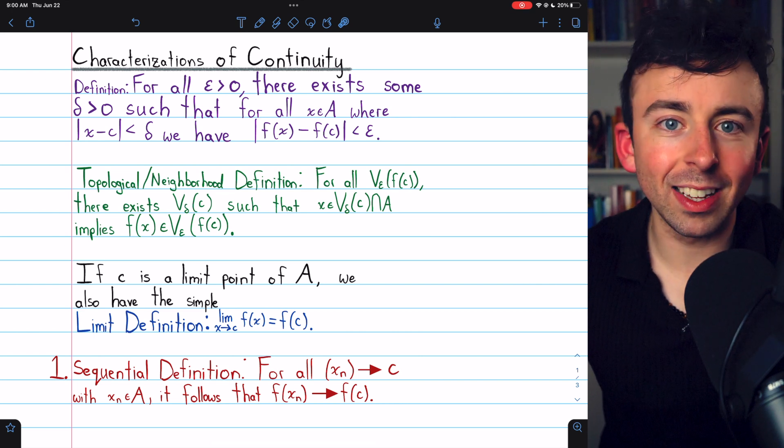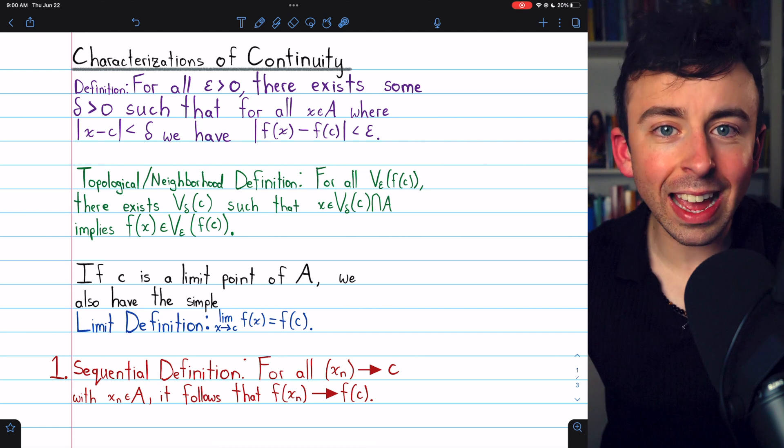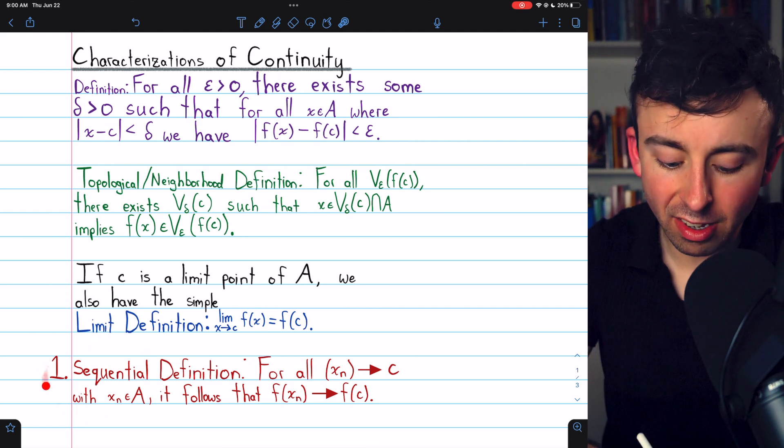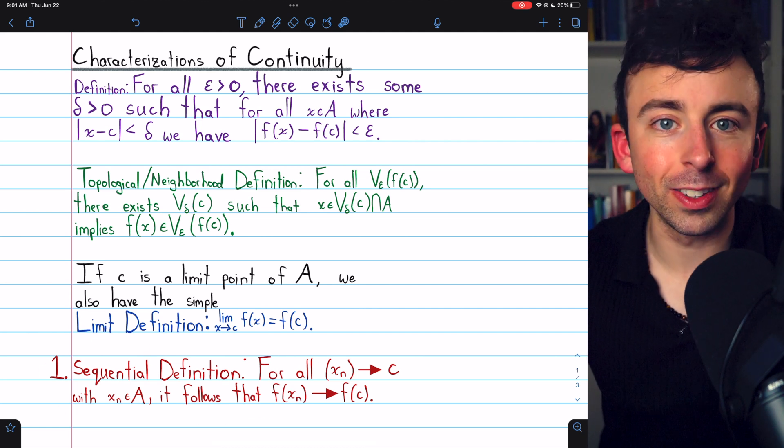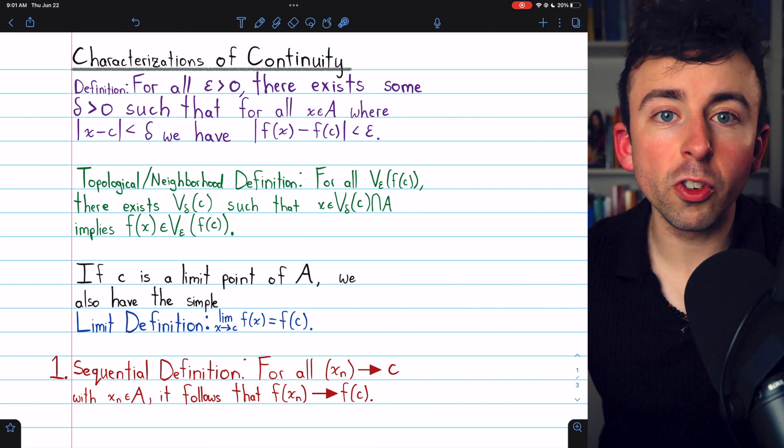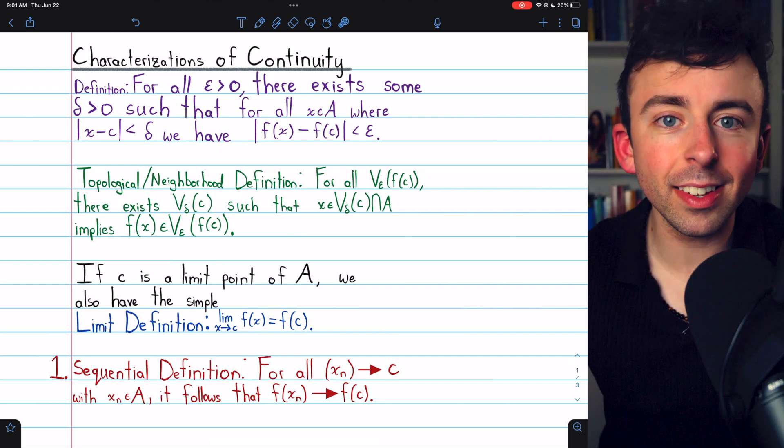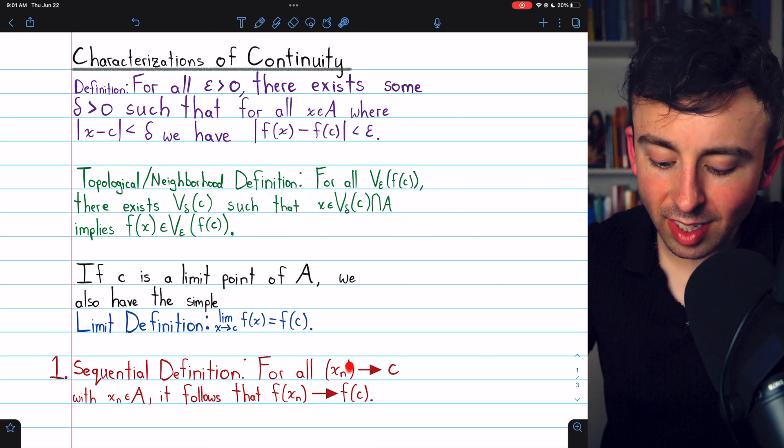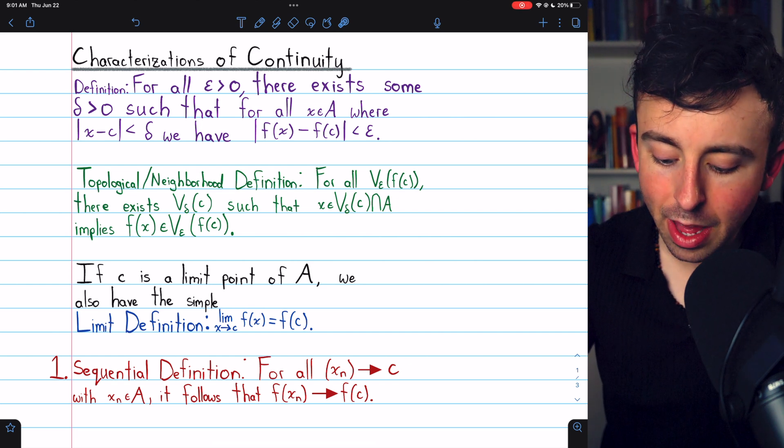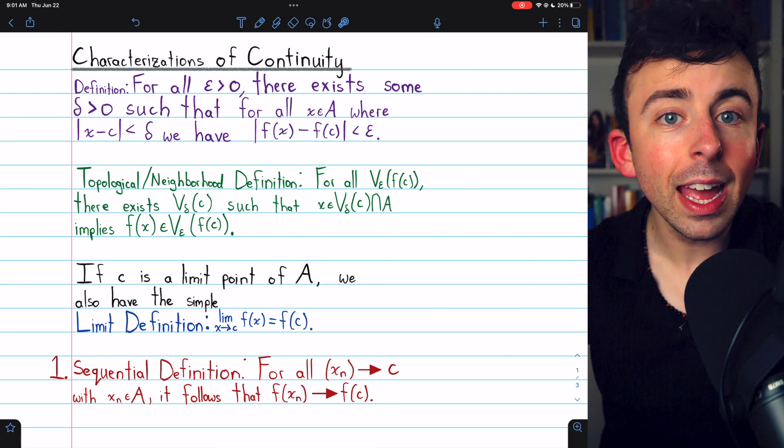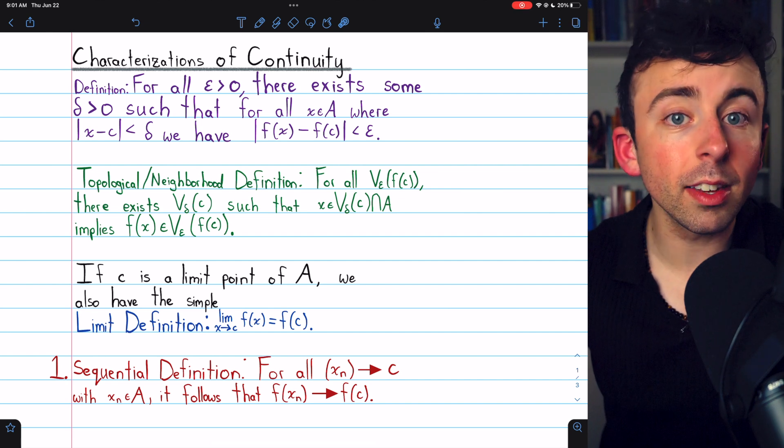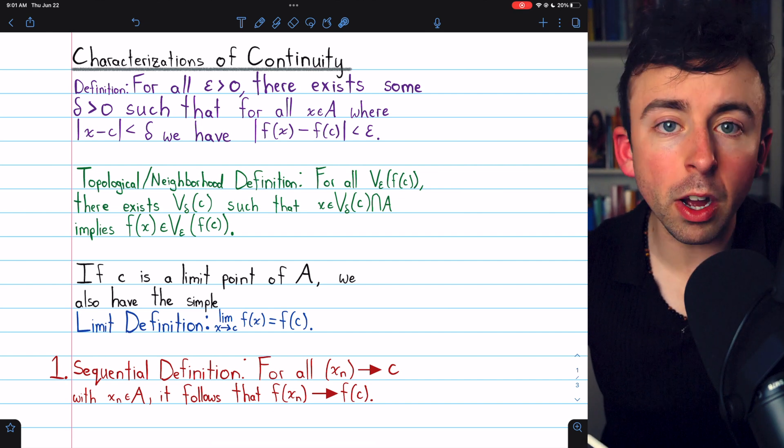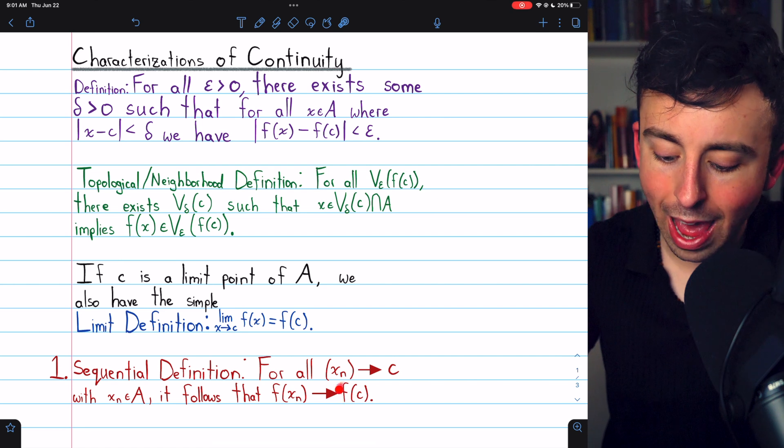Now, most of them are more or less the same thing in different packaging, but the one that was substantially different is the sequential definition of continuity. This says that our function f would be continuous at a point c if for all sequences in the domain that converge to c, it follows that the sequence of their images under the function converges to f of c.